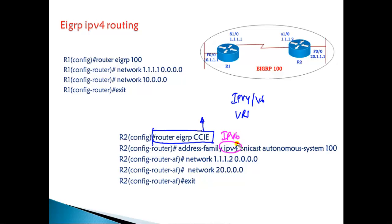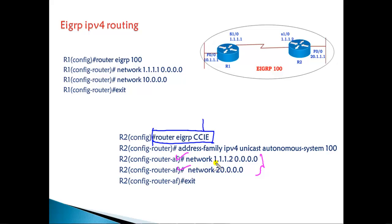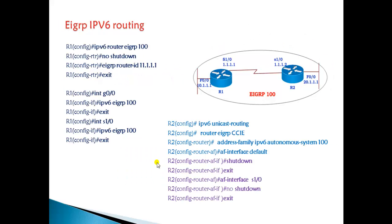Similarly, IPv6 configurations can be added by replacing the command with IPv6. All IPv6-related commands come under the IPv6 address family. The key point is we must enter the address family mode first before issuing network commands or any EIGRP-specific commands, but the network commands themselves are exactly the same.